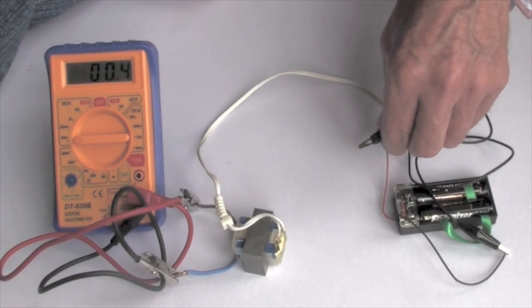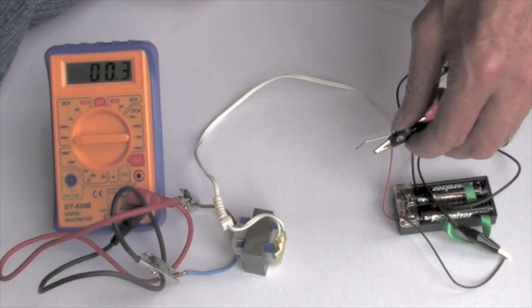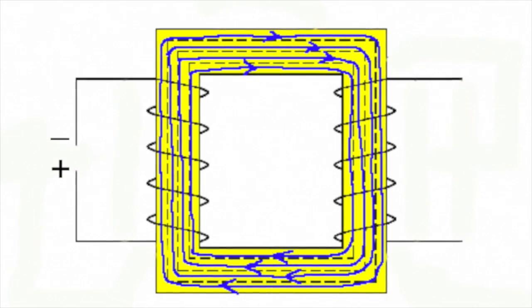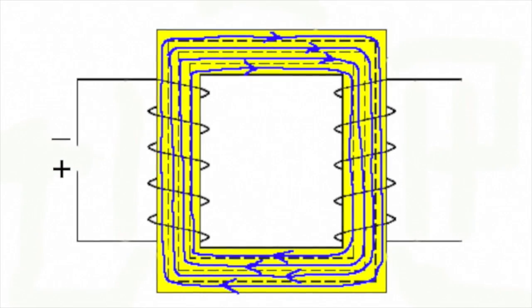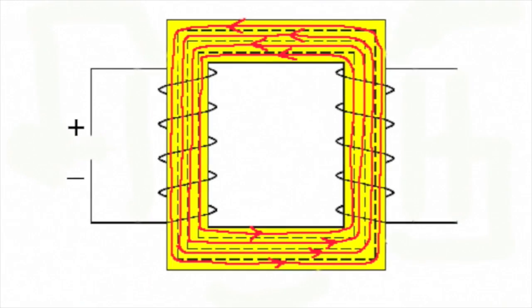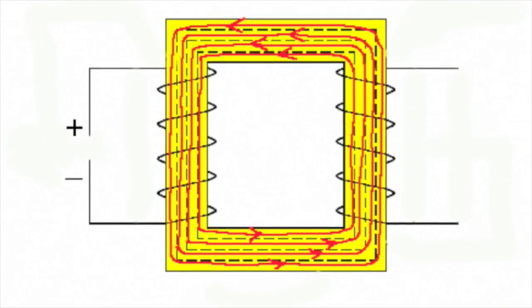The changing current in the primary coil results in a changing magnetic field through the core. This changing magnetic field cuts through the secondary coil and induces an EMF in that, which in turn drives an electric current.